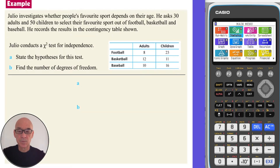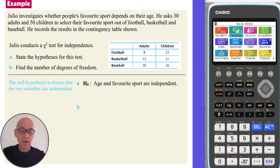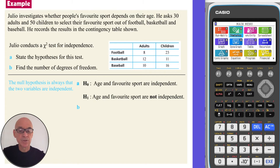In this first question, we're asked in part A to state the hypotheses for the test. The null hypothesis is always that the two variables are independent, so we write: age and favourite sport are independent. And the alternative hypothesis, H1, is that age and favourite sport are not independent.